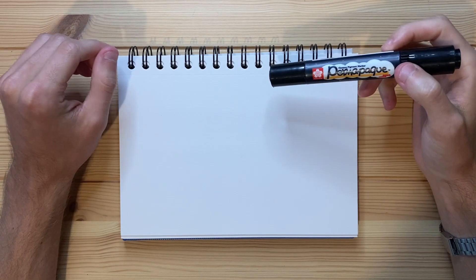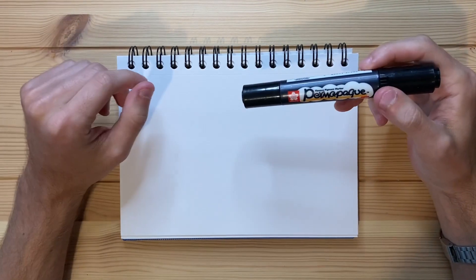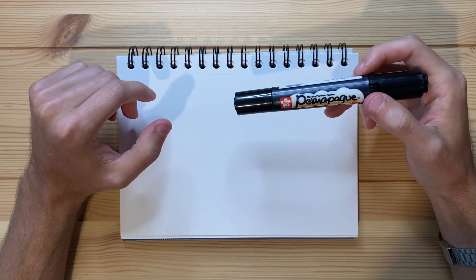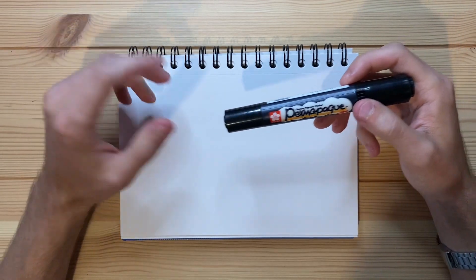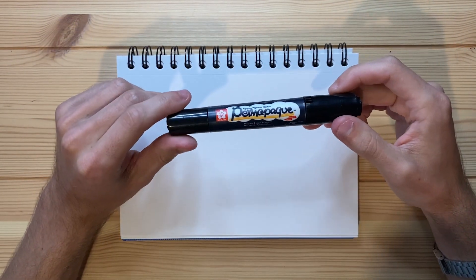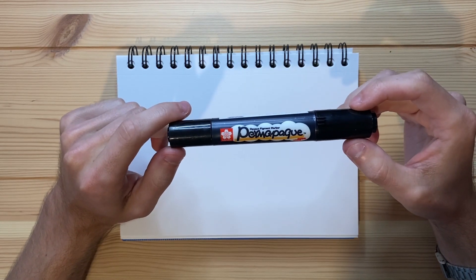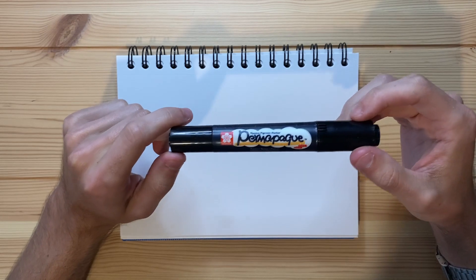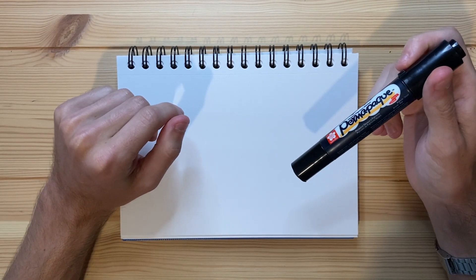Alrighty, so today I'm going to be drawing a bunch of fish eating another bunch of fish. I really enjoy drawing fish, and I'm certainly looking forward to drawing a bunch of fish eating a bunch of other fish. I'm going to be drawing with a Sakura Permapark opaque pigment marker. It's basically just a Sharpie, and I'm going to be drawing on a little bit of just cheap Walmart watercolor paper.